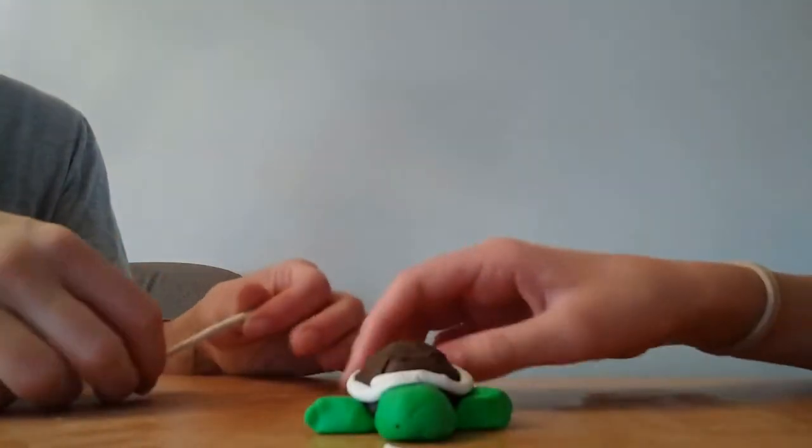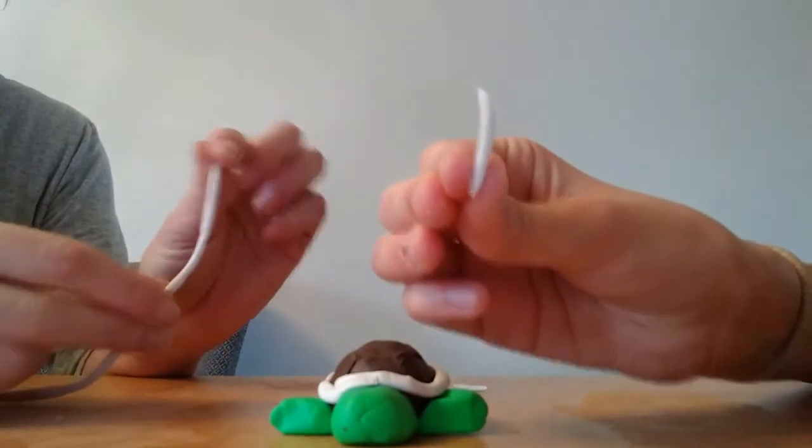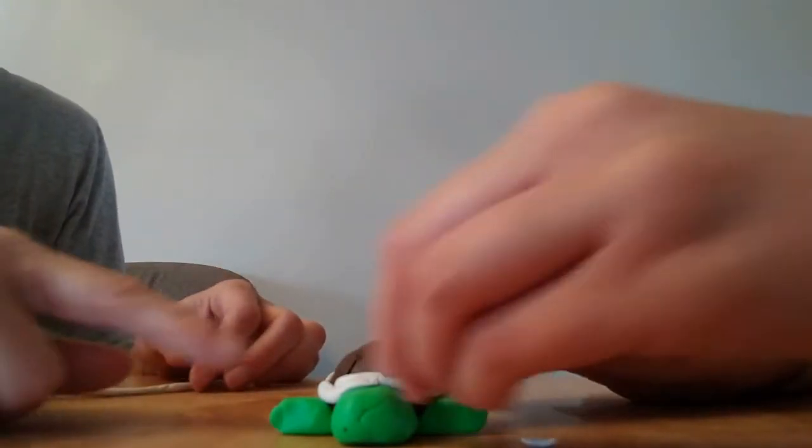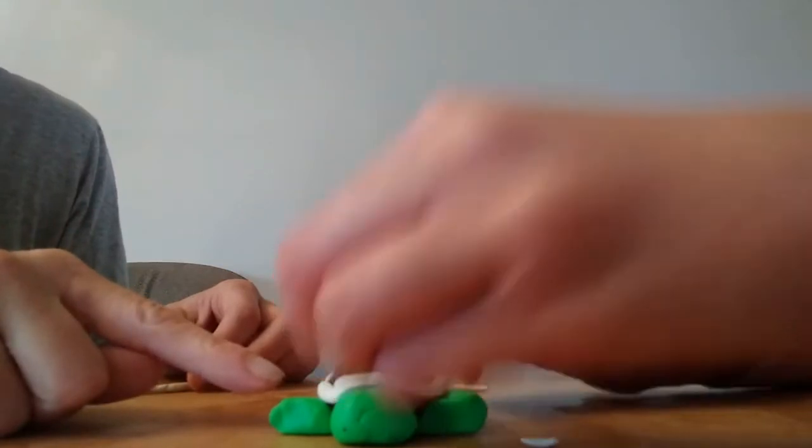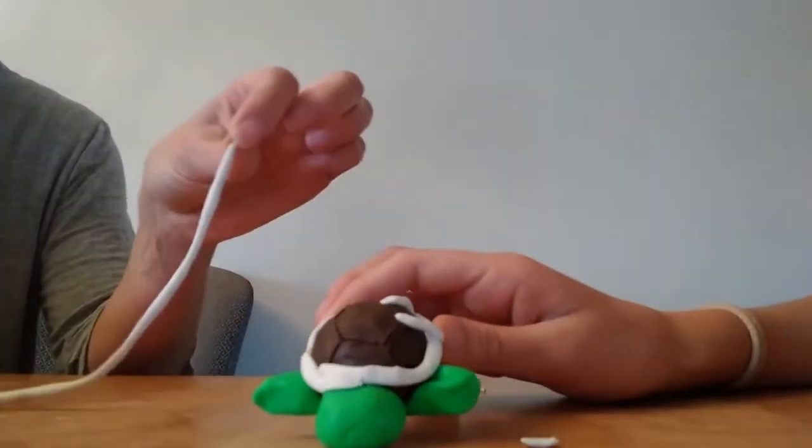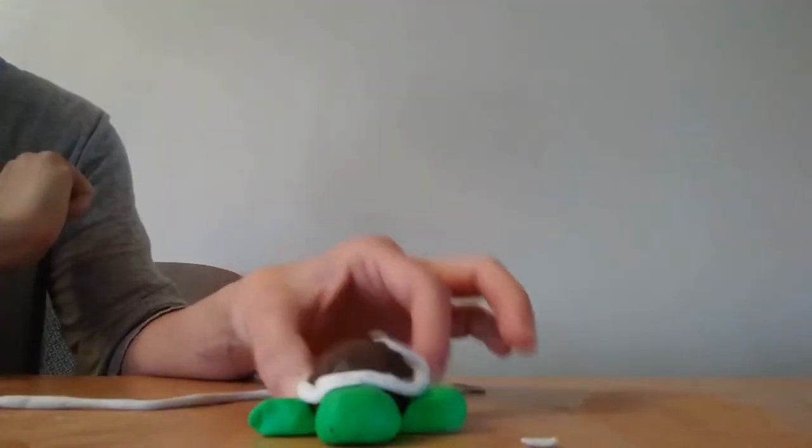Then what you're going to do is you're going to roll some more of the clay. This time make it a little bit more thin. And then you're going to take the pieces and, again, you're going to place it where you had created those lines on the shell. And then lastly, after you're done with that, you're going to place some more clay on the top where you had made that hexagon design.